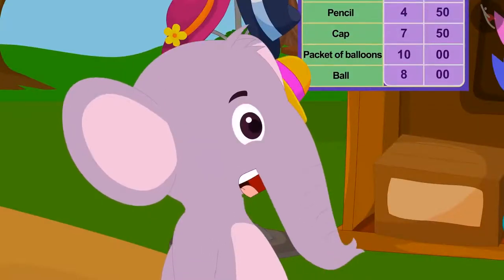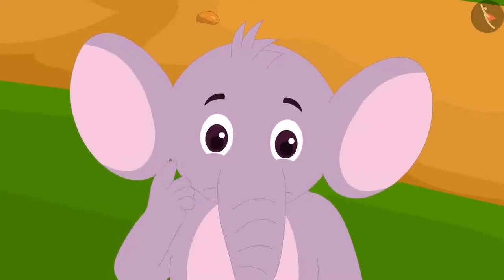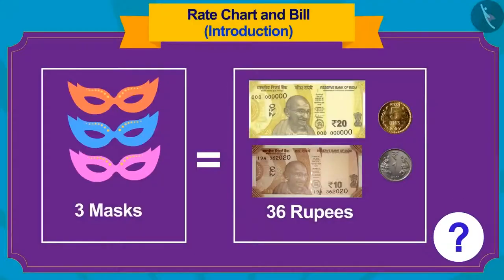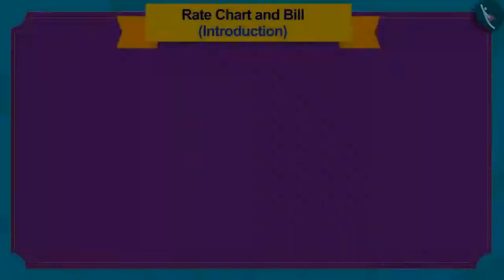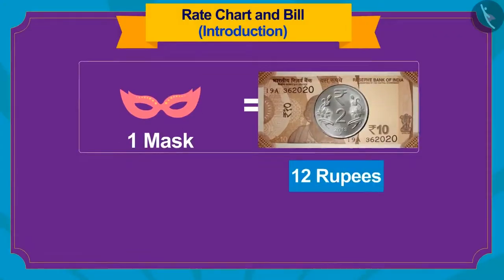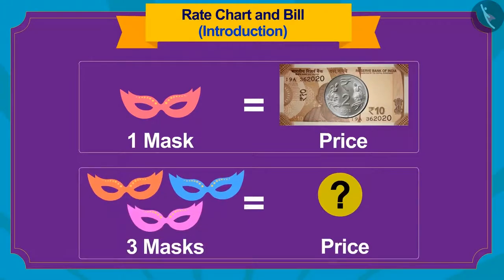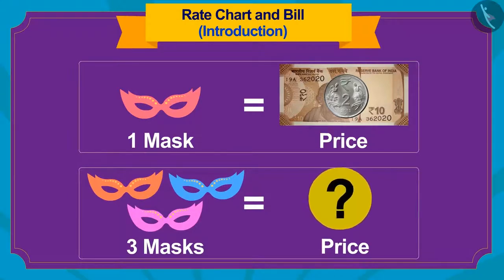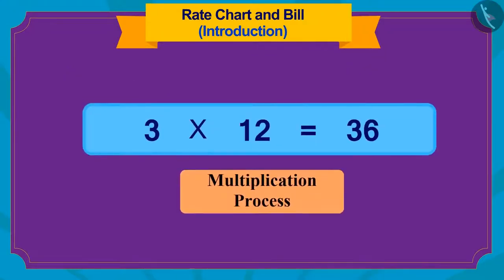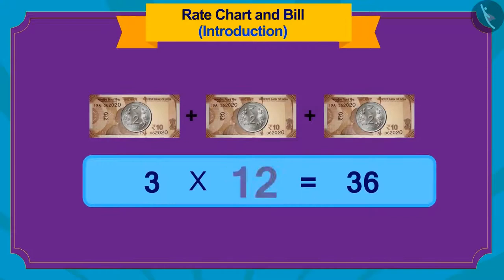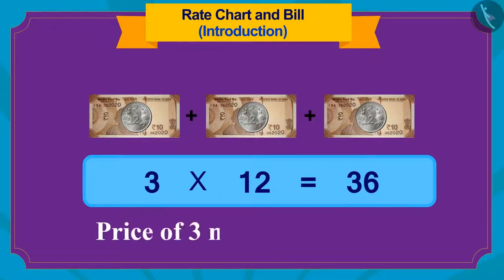Appu was shocked. He did not understand how Banni found this out. Do you know how Banni found this out? The price of one mask is 12 rupees. If we want to know the cost of three masks, we use the process of multiplication. 3 times 12 is 36. In this way, the cost of three masks becomes 36 rupees.